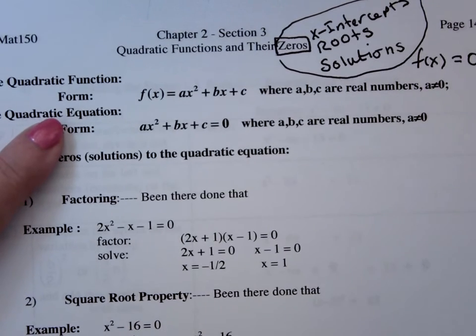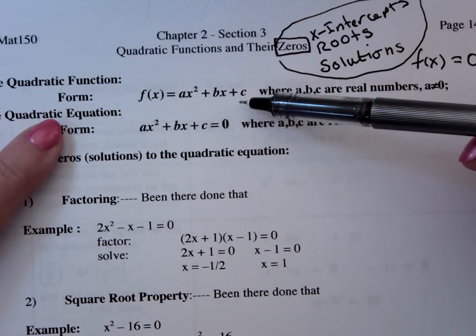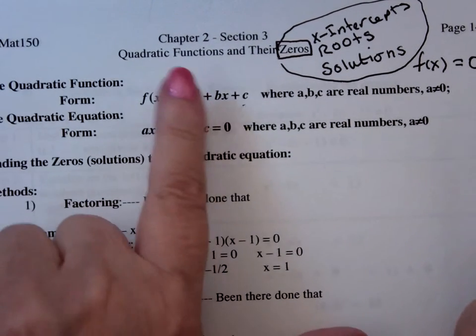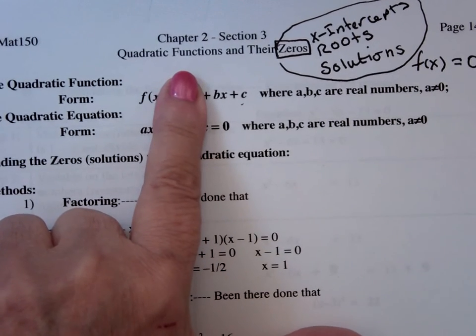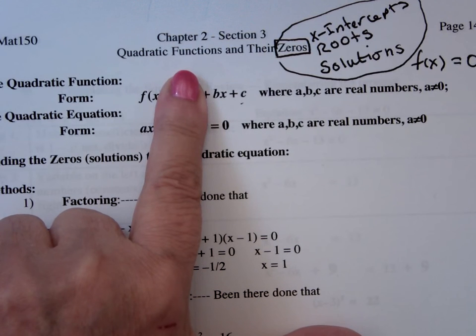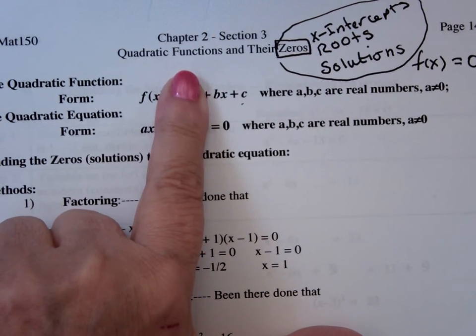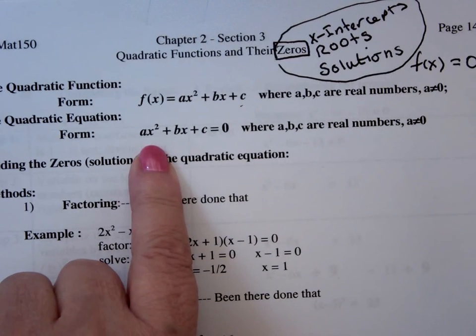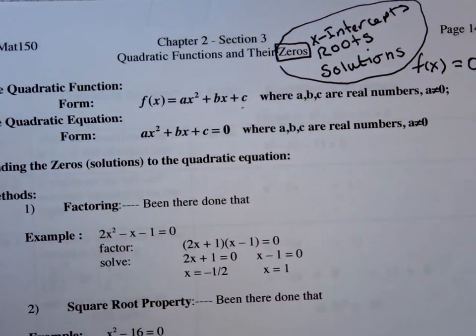A quadratic function is of the form ax squared plus bx plus c, where a, b, and c are real numbers. A can't be zero. If a is zero, that term goes away, and then what you have is something which is linear. And a quadratic equation of the form is ax squared plus bx plus c equals zero. This is all stuff we've done.